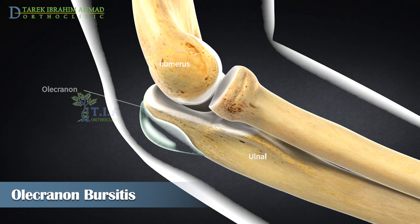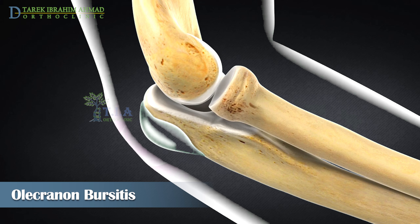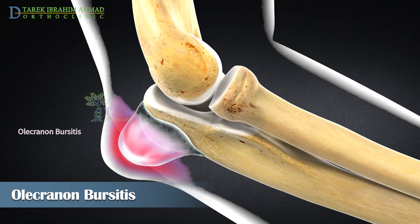The elbow bursa lies under the skin at the bony tip of the elbow in the back of the arm, which is called the olecranon. Normally, the bursa is flat and has only a minimal amount of fluid. However, the bursa can fill with extra fluid and become swollen if it becomes irritated or inflamed. This condition is called bursitis.